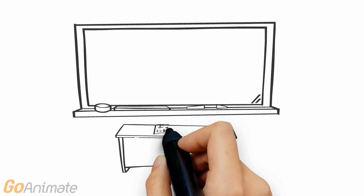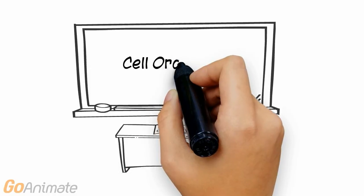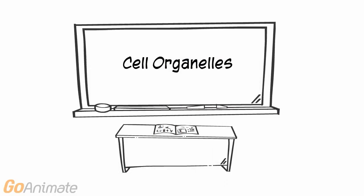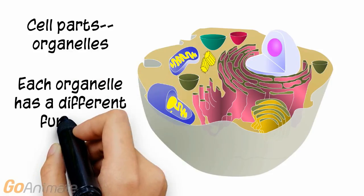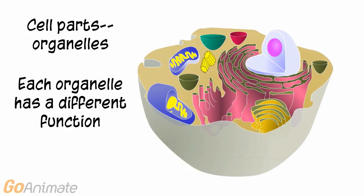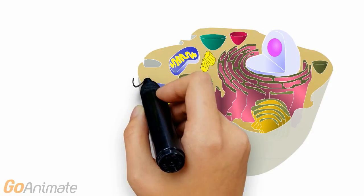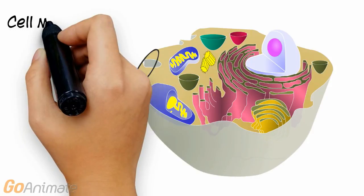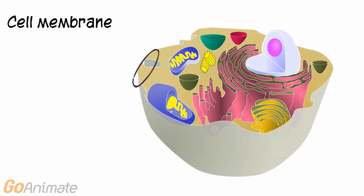Let's learn about cell organelles. Human cells, called eukaryotic cells, contain a number of structures called organelles. Each organelle has a unique function. Before we cover the organelles, let's take a look at the cell membrane.